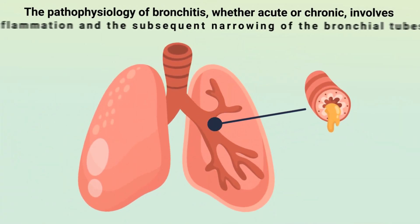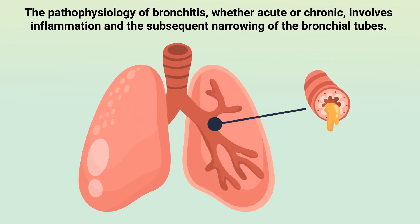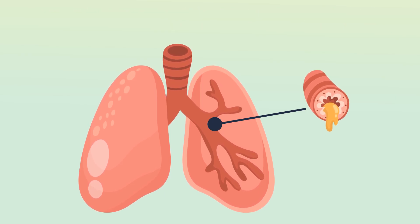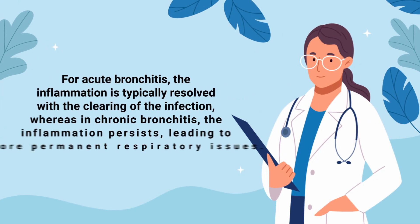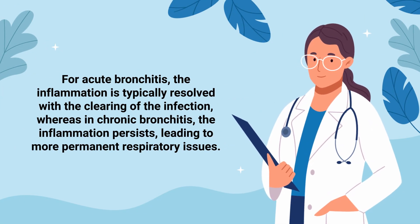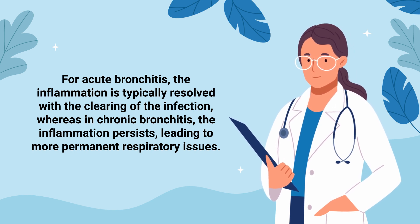The pathophysiology of bronchitis, whether acute or chronic, involves inflammation and the subsequent narrowing of the bronchial tubes. This inflammation stimulates the production of mucus, which can block or narrow the airways, leading to cough and difficulty in breathing. For acute bronchitis, the inflammation is typically resolved with the clearing of the infection, whereas in chronic bronchitis, the inflammation persists, leading to more permanent respiratory issues.